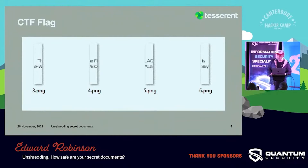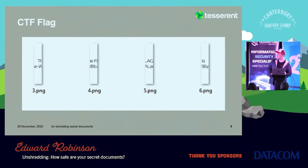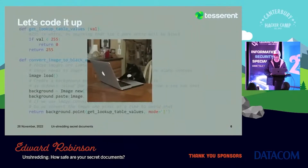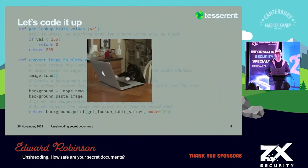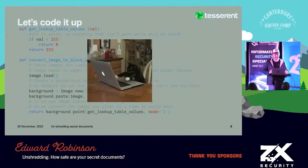For one of the flags, the shredded pieces were in order, so just looking at them in Windows Explorer gave you a pretty clear idea of what the text was. So, now I had a problem that was completely solvable manually, either using Windows Explorer or an image editor. The only sensible option was to spend a couple of hours writing an algorithm to do it for me.